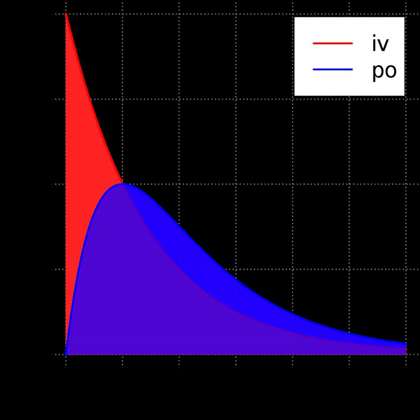Absolute bioavailability compares the bioavailability of the active drug in systemic circulation following non-intravenous administration, i.e., after oral, ocular, rectal, transdermal, subcutaneous, or sublingual administration, with the bioavailability of the same drug following intravenous administration. It is the fraction of the drug absorbed through non-intravenous administration compared with the corresponding intravenous administration of the same drug.